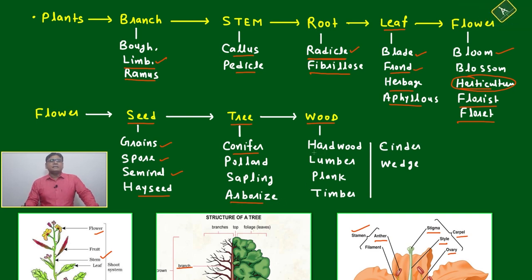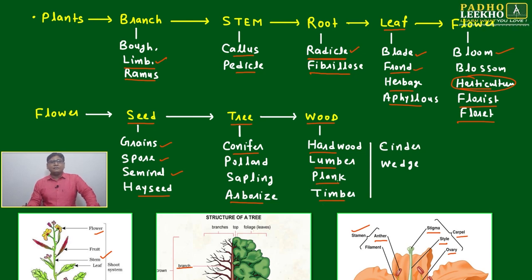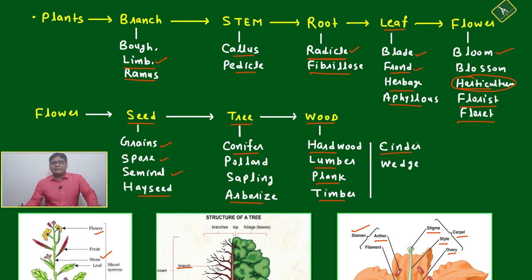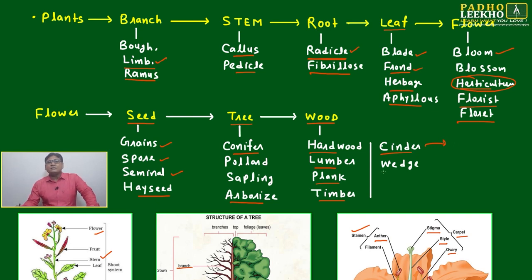Next is hardwood, lumber, plank, timber — all these words are related to wood. After that, cinder — cinder means not fully burnt wood, already discussed about this.